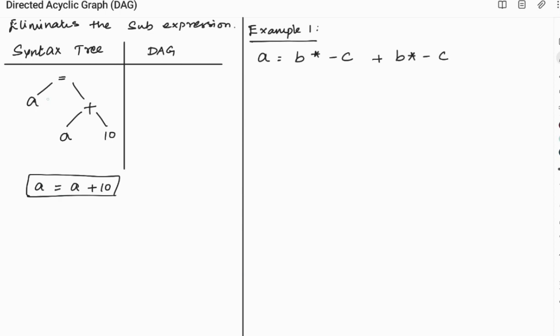But in DAG there is a possibility of eliminating the sub-expressions. So here we can see that a is being repeated, that is a plus 10 value gets assigned to a again. So in DAG we will be summing a with 10 and we will be assigning the value of this a plus 10 to again a. So we can use this arrow. We don't want to again write the operand named a. So this is the few difference between the syntax tree and DAG.